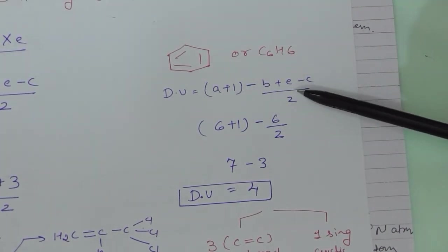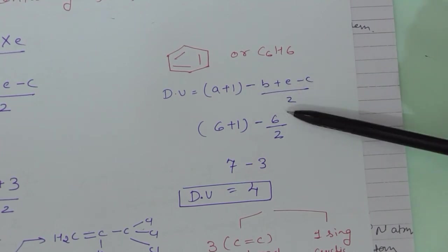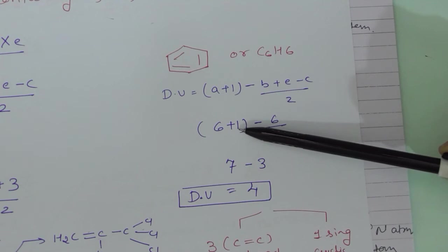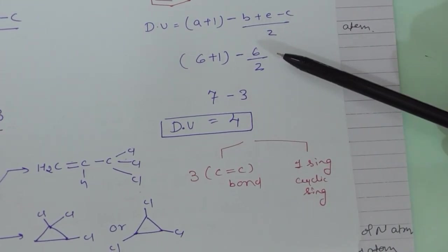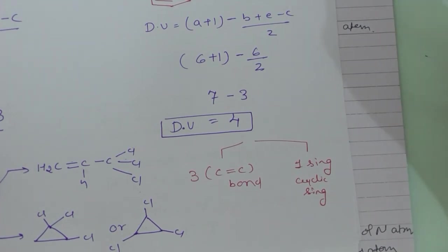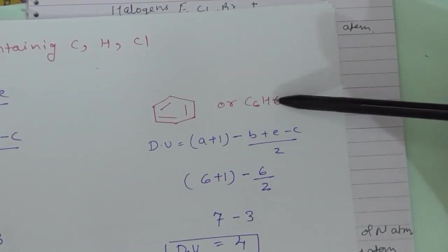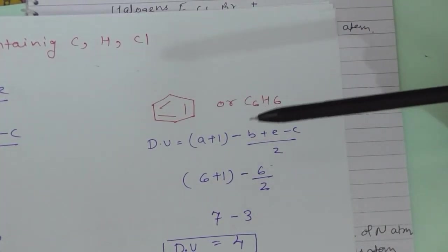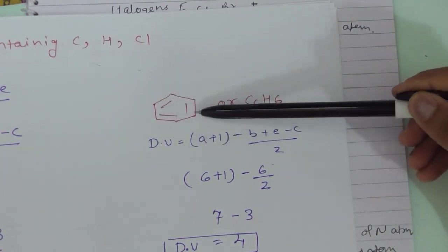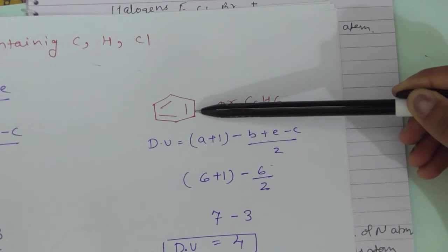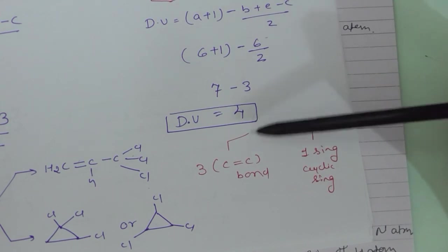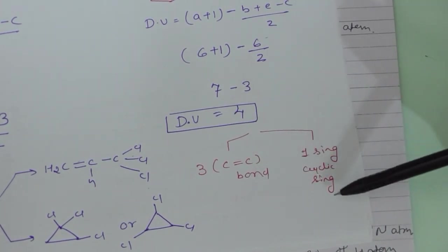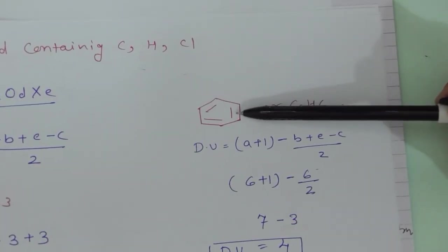For C6H6, applying the formula: 6 + 1 − 6/2 = 7 − 3 = 4. Degree of unsaturation is four. We know C6H6 is benzene — it has one ring and three carbon-carbon double bonds, which gives exactly four degrees of unsaturation. So if given only this empirical formula, we can deduce there are three C=C double bonds and one cyclic ring.